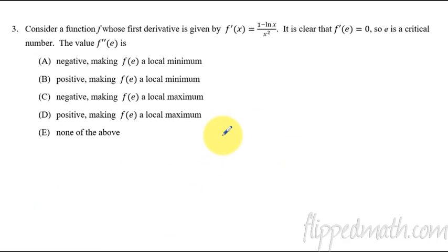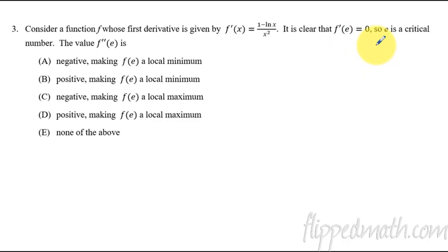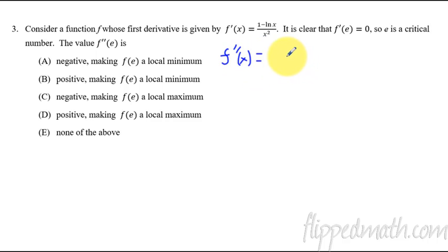Number three: we have a function whose derivative is given, and f prime evaluated at x equals e is zero, which means e is a critical number — a candidate for a max or min. They're asking whether the second derivative at e is negative or positive and whether that gives a local min or local max. To figure this out, I need to find the second derivative using the quotient rule. The denominator will be x squared squared, which is x to the fourth.